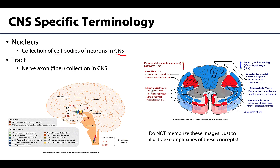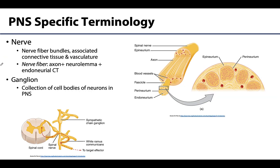Don't memorize those two images — they're much too complex right now. Moving into the peripheral nervous system, let's talk nerves. As mentioned, nerves are similar to tracts in the CNS. Nerves consist of nerve fiber bundles, associated connective tissue — the endo-, peri-, and epineurium — and importantly, vasculature is also present in a nerve. A nerve fiber, more specifically, is an axon plus its neurolemma or plasma membrane, and any associated connective tissue. So a nerve is a bunch of those nerve fibers or nerve fiber bundles wrapped up with connective tissue and vasculature.